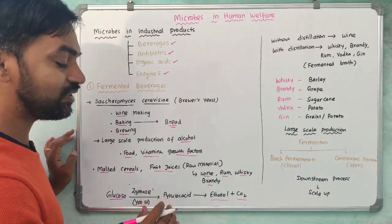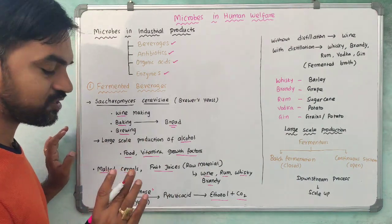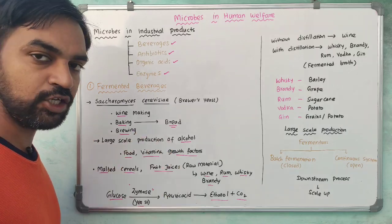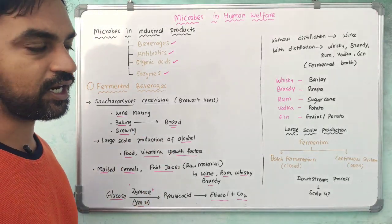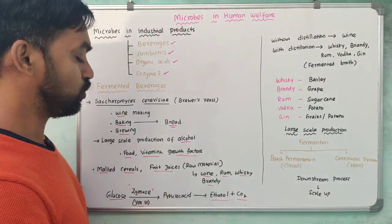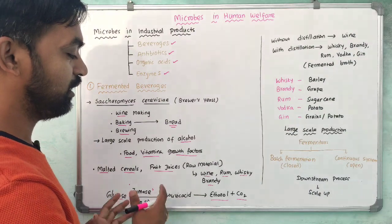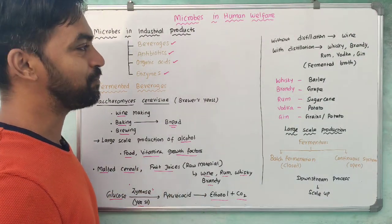This fermentation occurs under anaerobic conditions — completely closed, with no oxygen. In this way, yeast helps in alcohol production.